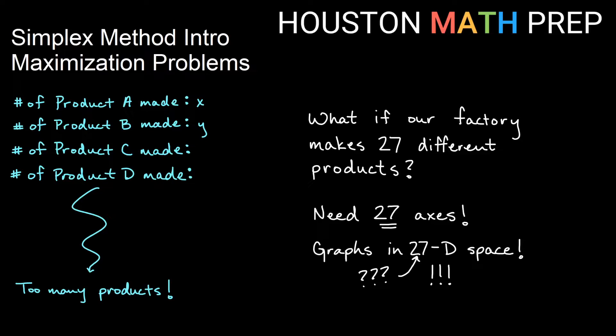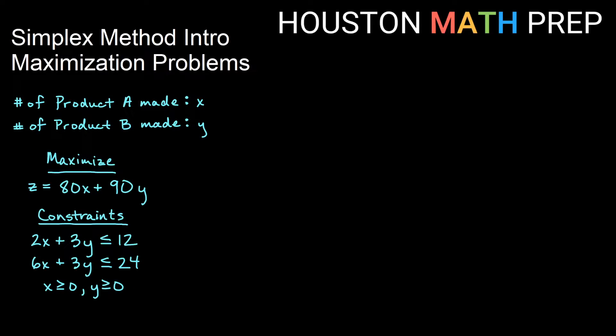So we need another method that's going to allow us to solve maximization problems when we have more constraints or when we have more products. And we need something that will work without having to graph. And that method is called the simplex method. Okay, so getting into maximization with the simplex method, I'm going to point out one small thing that I changed my maximization function to 80x plus 90y here. Otherwise, it's the same problem. You'll see why later on in another video why I changed that from 100x 100y, but it's not important now. So new but very similar problem.